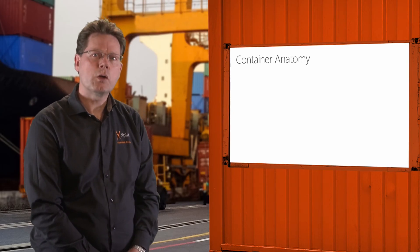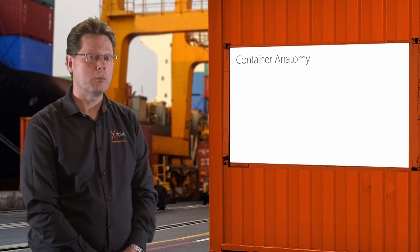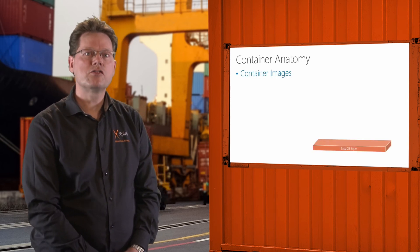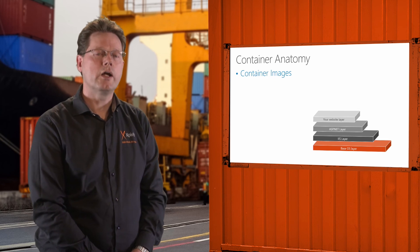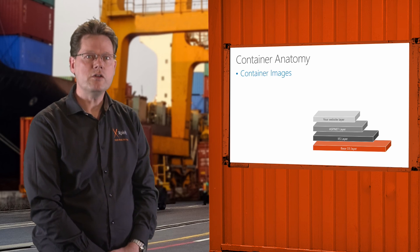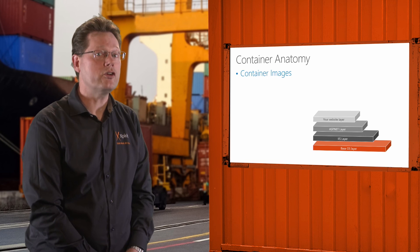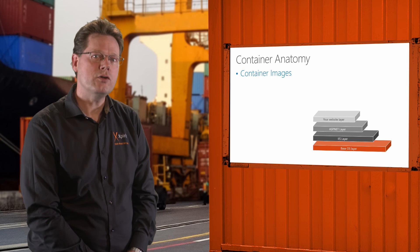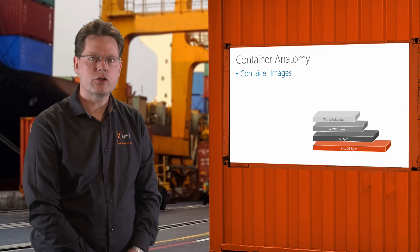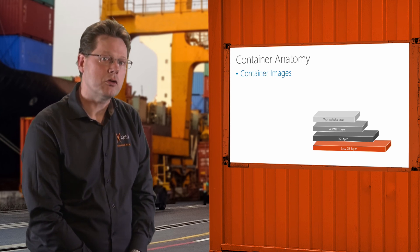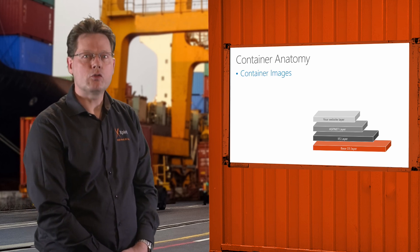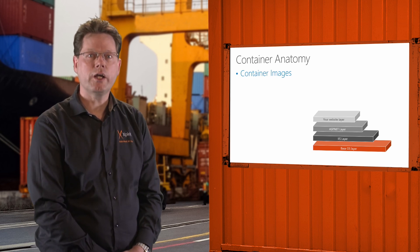When we talk about containers, we also need to talk about images, since a container is a running instance of a container image. A container image consists of several layers. The first layer is always the base operating system layer, which provides the operating system services. On top of the operating system layer, you create new additional layers. Each layer is a delta of changes — for example, if you want a container running Windows Internet Information Server (IIS), you can add that layer by enabling the IIS feature on the operating system. After enabling the feature, you stop the container and commit the changes to a new image. You constantly add layers to images until you have a container fully capable of running your own application.